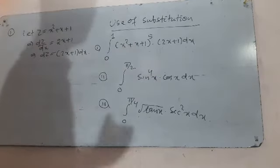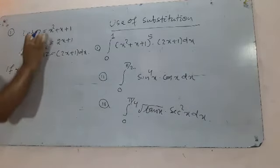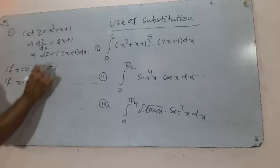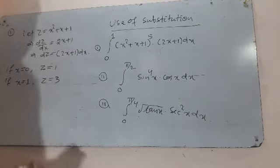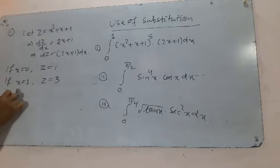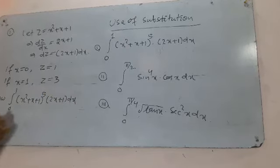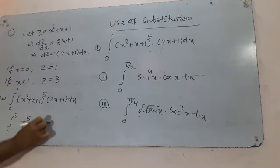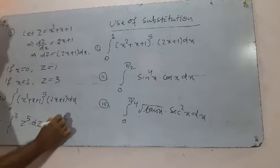When x varies from 0 to 1, we find the new limits for z. When x = 0, z = 0 + 0 + 1 = 1. When x = 1, z = 1 + 1 + 1 = 3. So the integral from 0 to 1 of (x² + x + 1)⁵(2x + 1) dx becomes the integral from 1 to 3 of z⁵ dz. When the variable changes, the lower and upper limits also change.